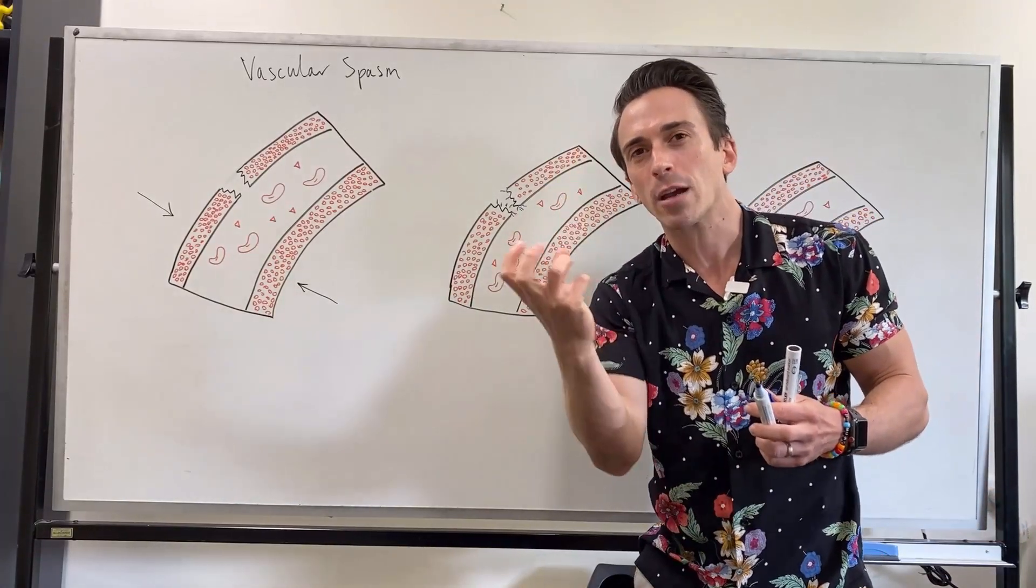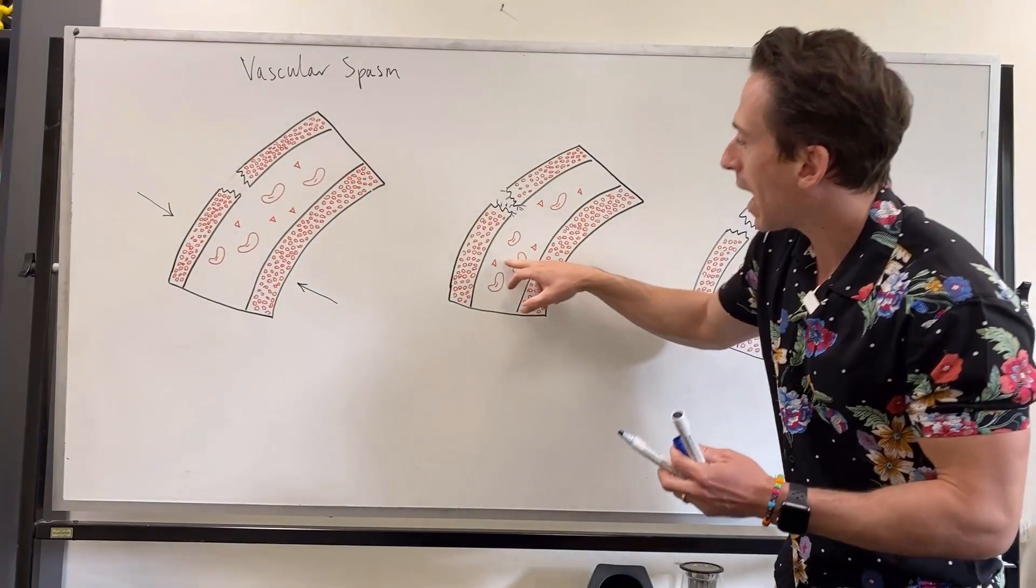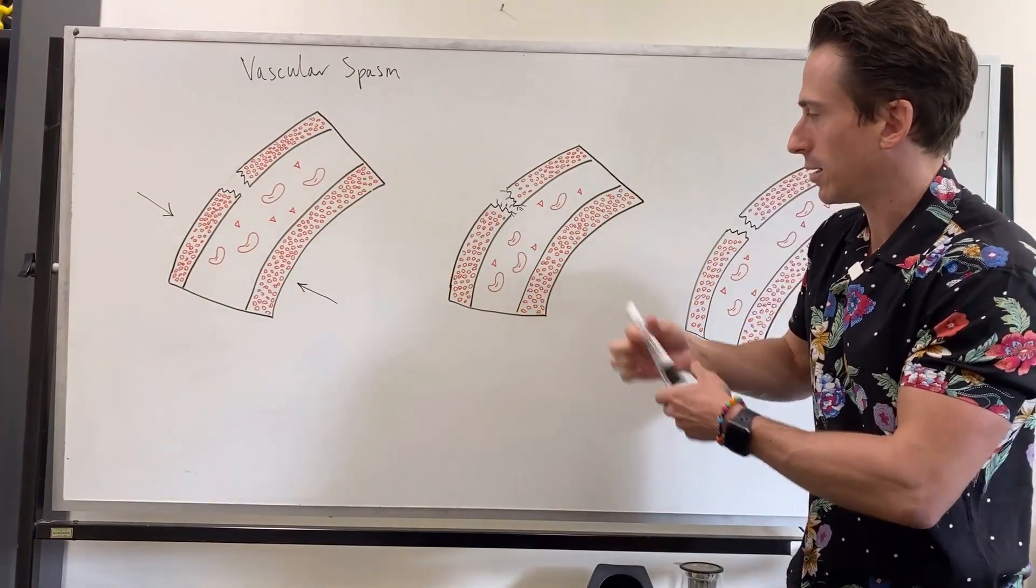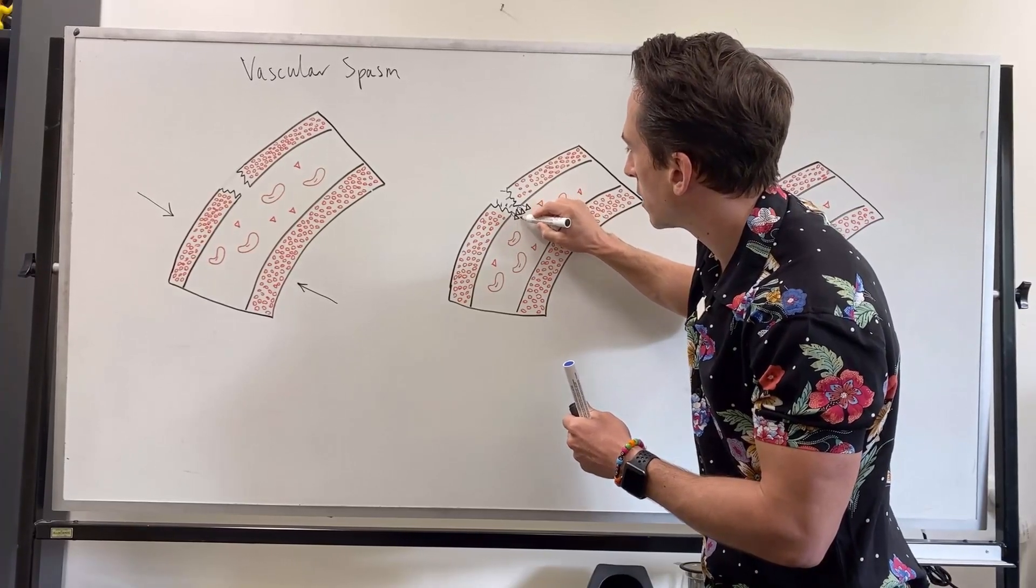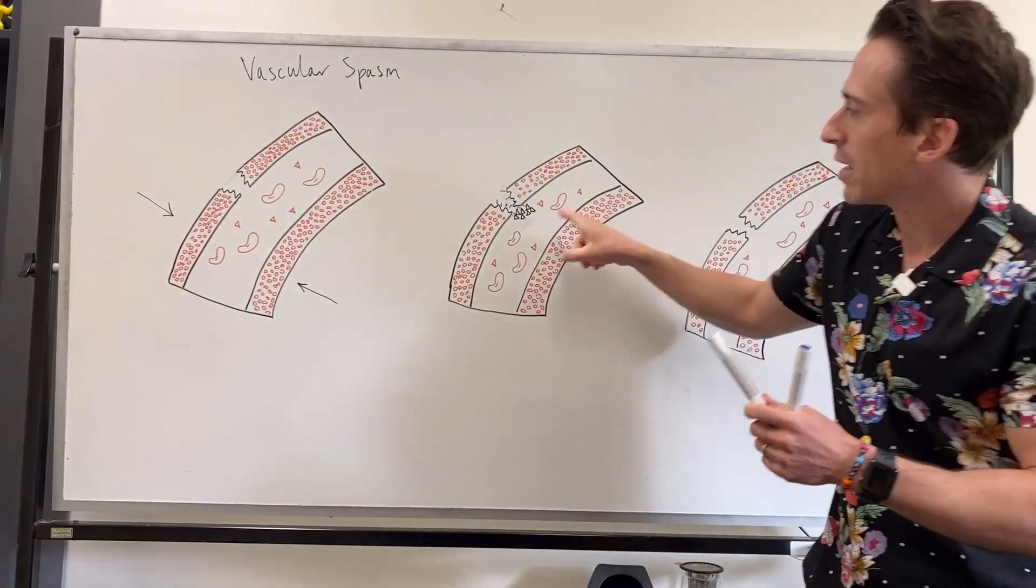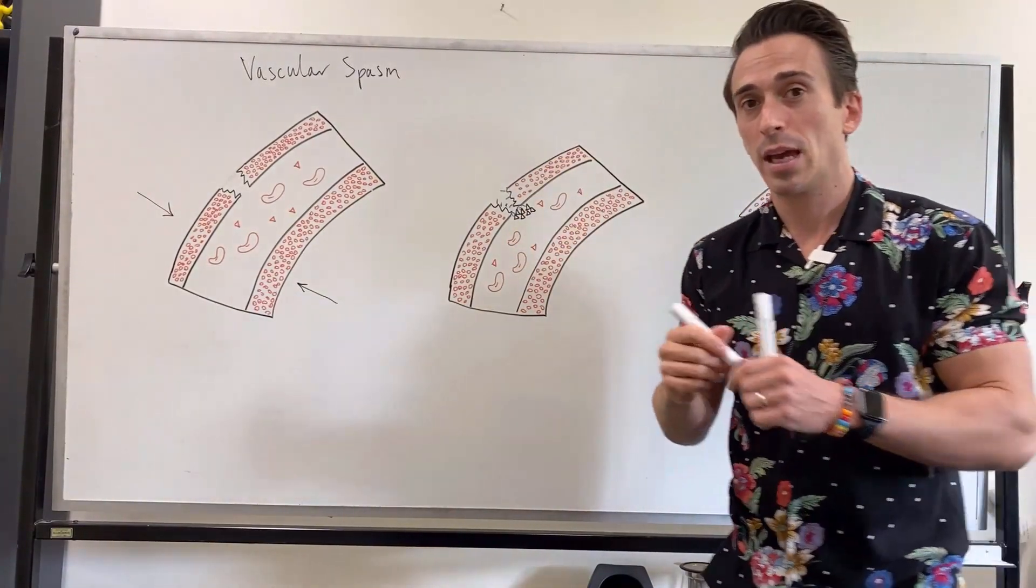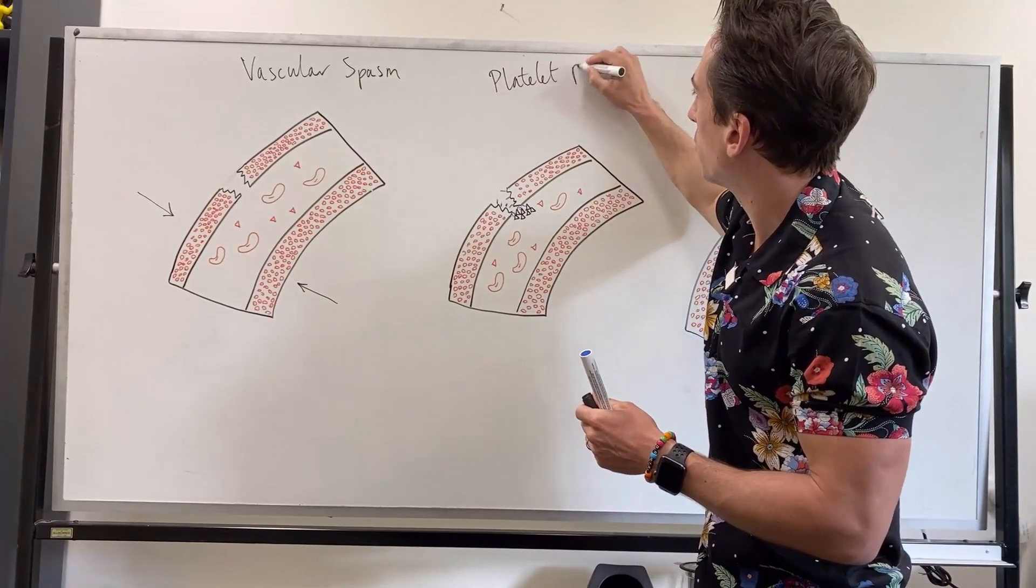And platelets are fragments of cells called megakaryocytes that are produced in the bone marrow. And platelets will come past and they're going to recognize this collagen that's been exposed. Now something interesting happens here. This second step is known as the platelet plug. So let's write that up. The platelet plug.